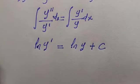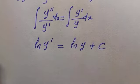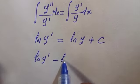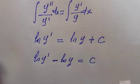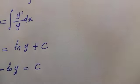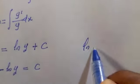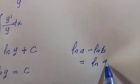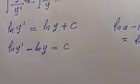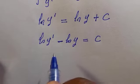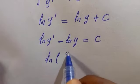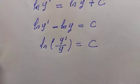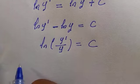Transferring ln(y) to the left-hand side gives ln(y') minus ln(y) equals c. By the logarithm rule, ln(a) minus ln(b) equals ln(a/b), so applying that here we have ln(y'/y) equals c.